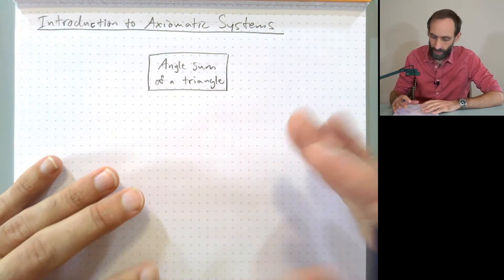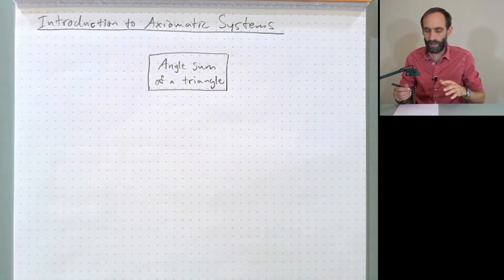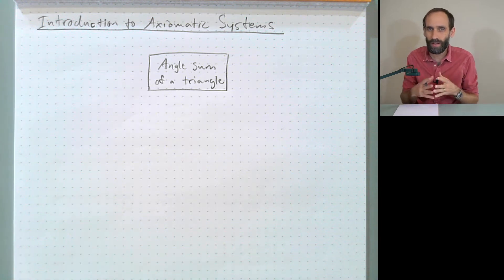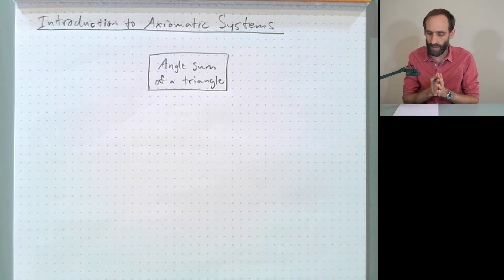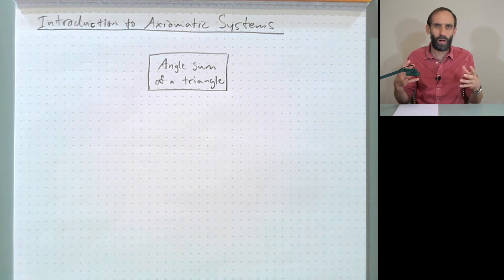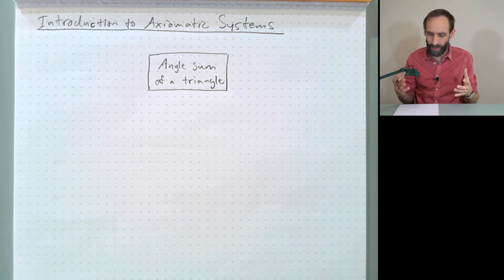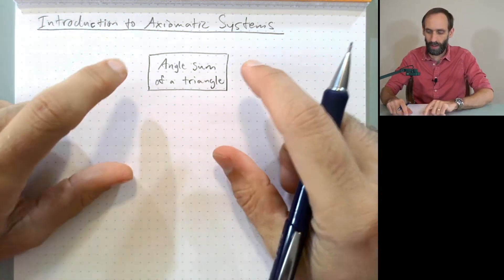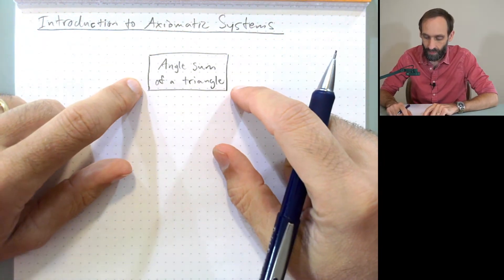And the system that we're going to use to build up to this fact is what mathematicians call an axiomatic system. I won't be treating it as formally as you probably would see in a college level math class, but I want you to have the general idea. So I like to think of an axiomatic system as like a brick wall or a brick structure. And for right now, at the top of that brick structure, we're going to have this angle sum of a triangle.